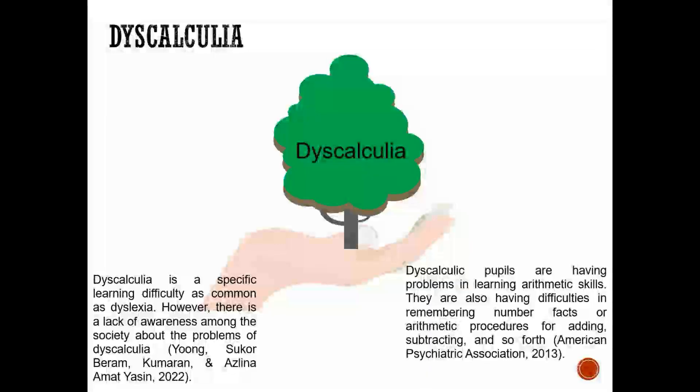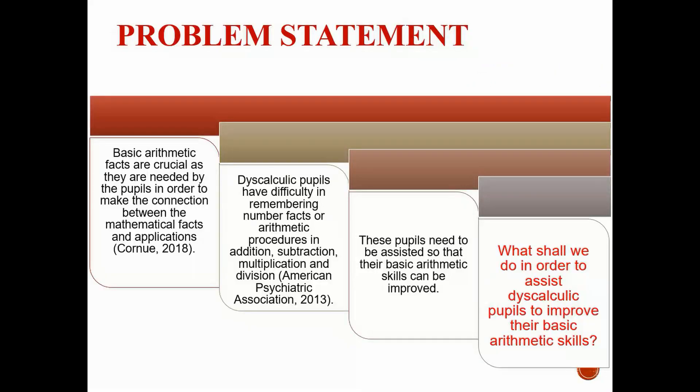Allow me to introduce dyscalculia. Dyscalculia is a specific learning difficulty as common as dyslexia. According to the American Psychiatric Association 2013, dyscalculia pupils are having problems in learning arithmetic skills. Basic arithmetic facts are crucial as they are needed by pupils in order to make the connection between mathematical facts and applications. Dyscalculia pupils have difficulty in remembering number facts or arithmetic procedures. So, what shall we do in order to assist dyscalculia pupils to improve their basic arithmetic skills?